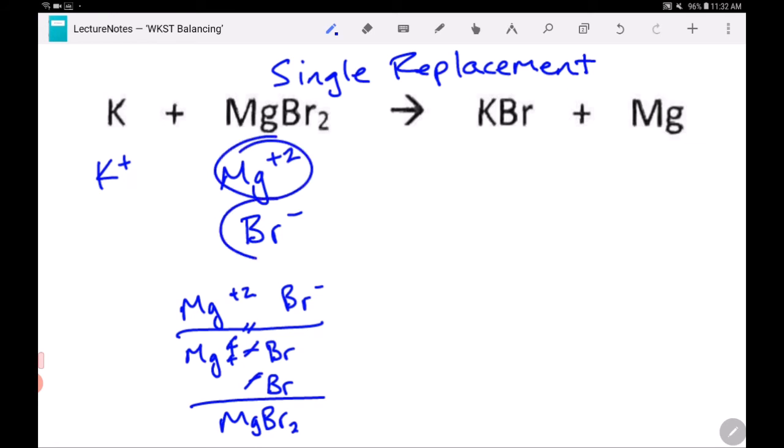KBr then is formed because these atoms are going to rearrange themselves. Right now, this cation is with that anion. If I tried to put this guy with that guy, you'd be trying to put two cations together and like charges repel. If you try to put this guy together with this guy, you would have the same thing that you started with. So the cation gets together with the anion.